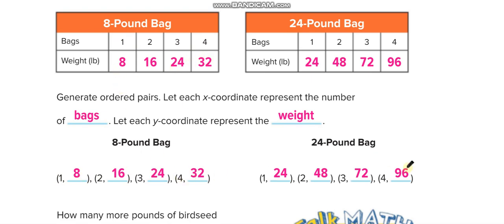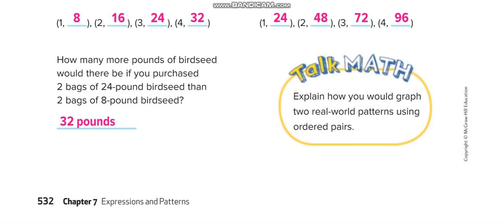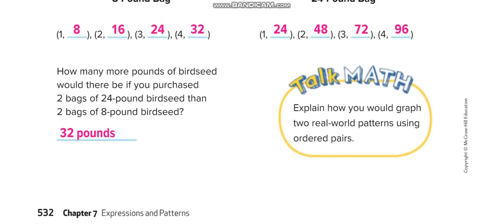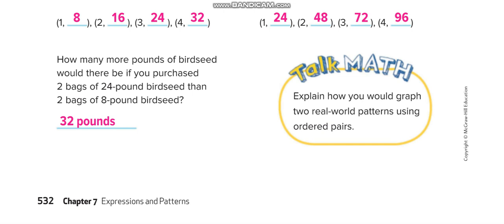The first column is the X-axis — one, two, three, four — and the second column is the Y-axis. How many more pounds of bird seed would there be if you purchase two bags of twenty-four pounds versus two bags of eight pounds? Two bags of eight pounds gives you sixteen pounds, and two bags of twenty-four pounds gives you forty-eight pounds. Forty-eight minus sixteen equals thirty-two pounds.